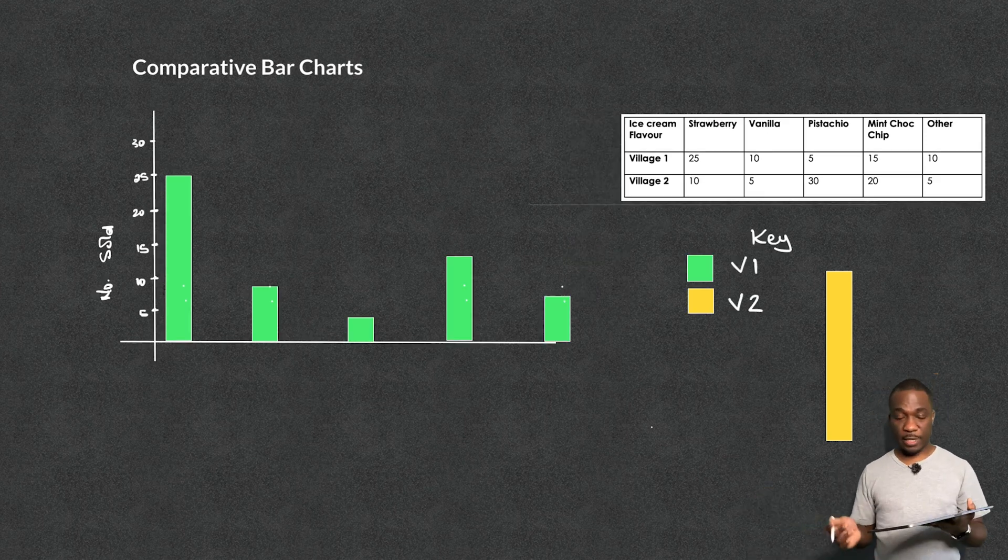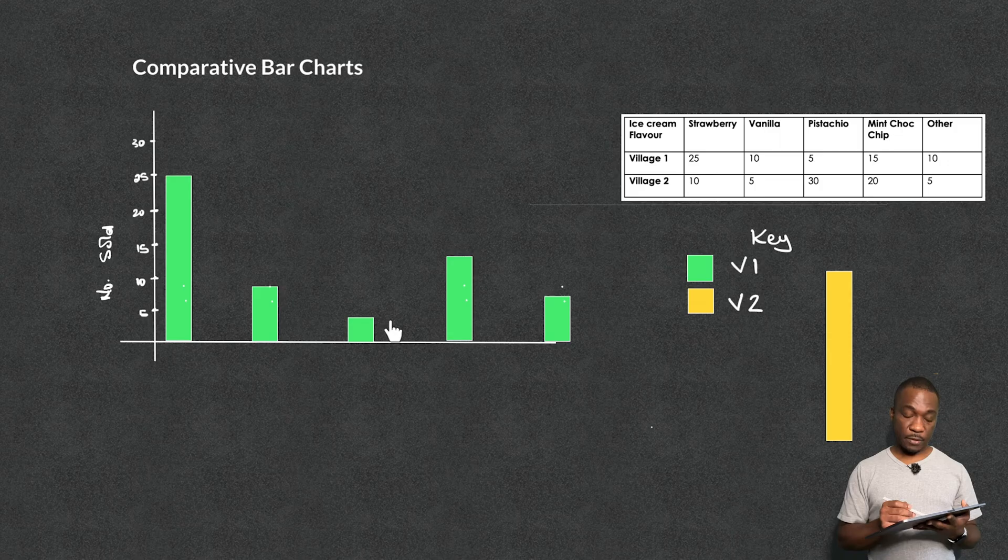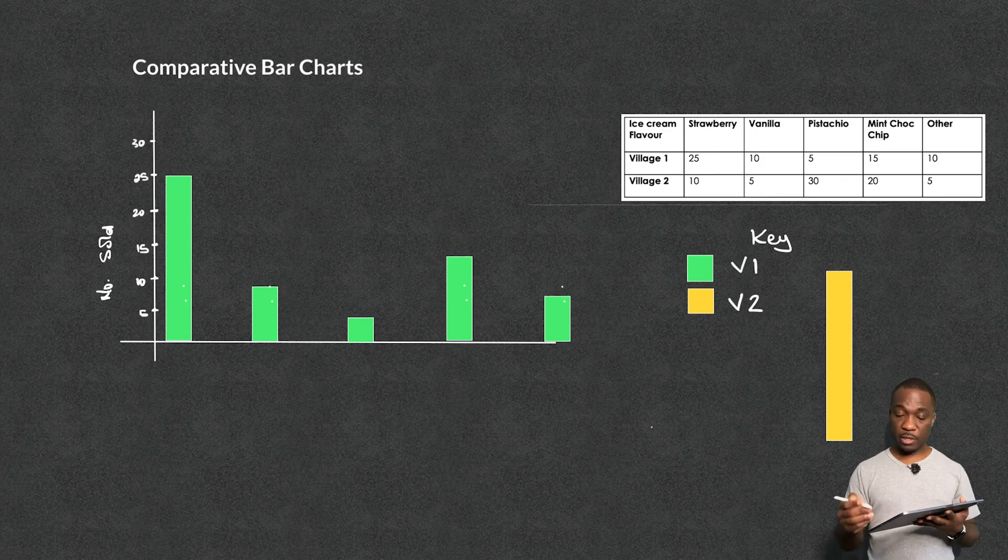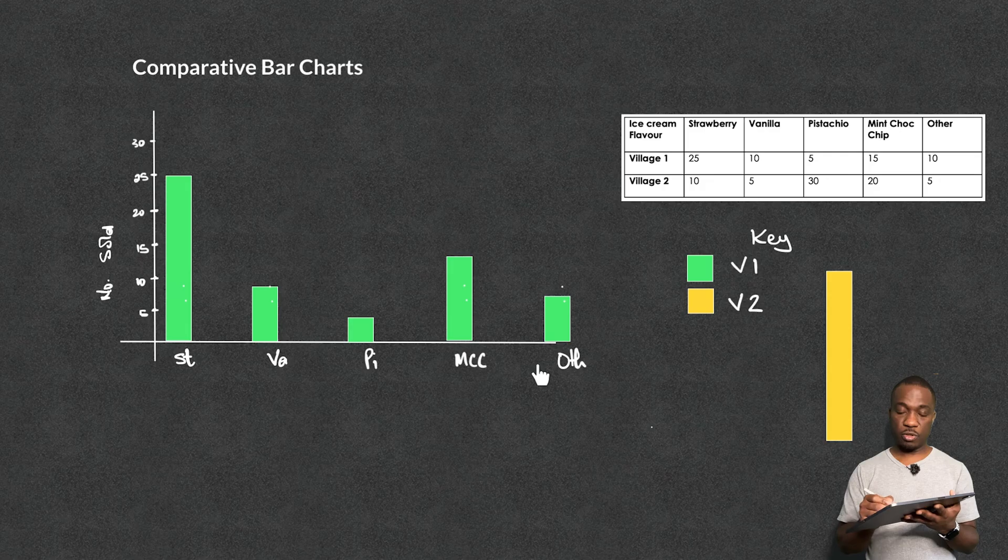Okay, so let's catch you up on what I've done so far. So what I've done is I've plotted my strawberry at 25, my vanilla at 10, pistachio at 5, that went up to 15 for the mint choc chip, and the other is 10. We're just going to label the bottom real quick. Okay, so I decided to go for shortened stuff. So strawberry is ST, vanilla, pistachio, mint choc chip, and other.